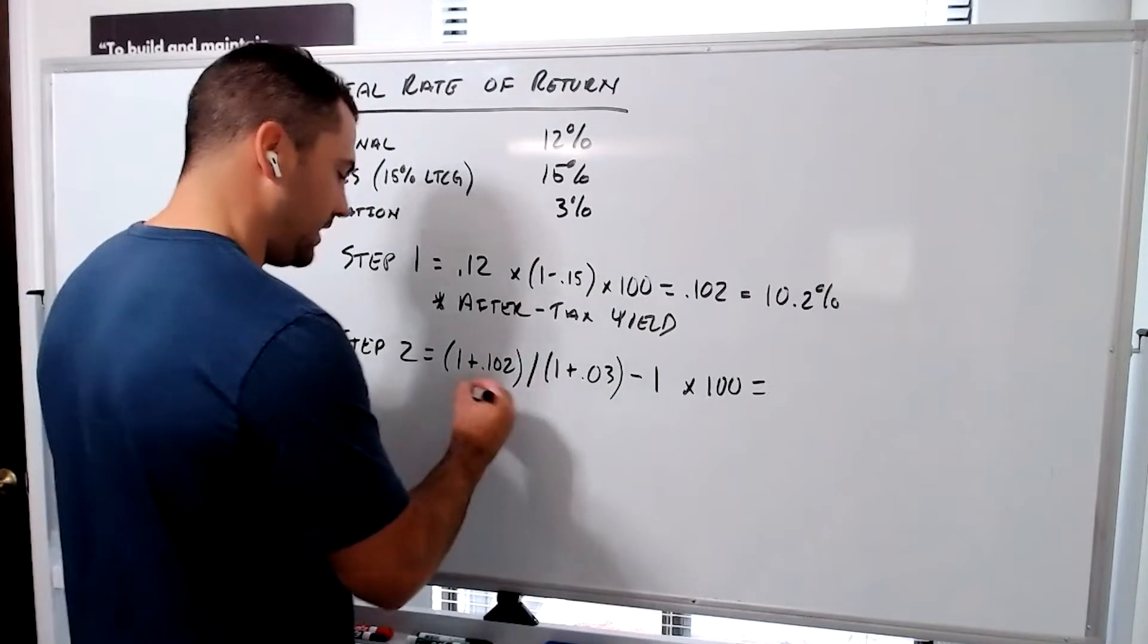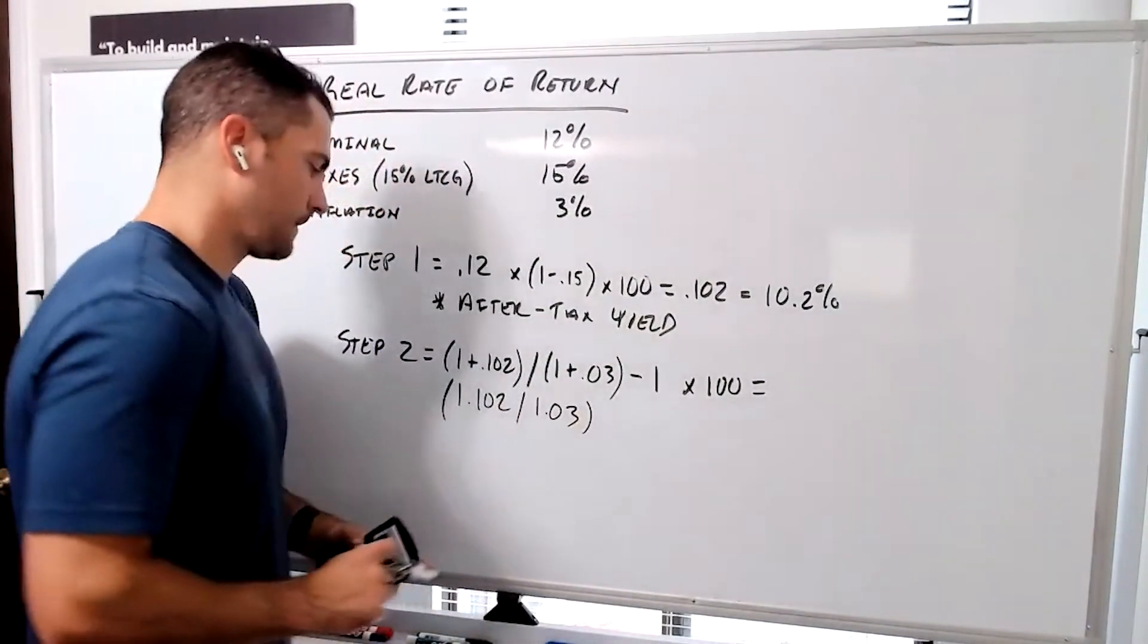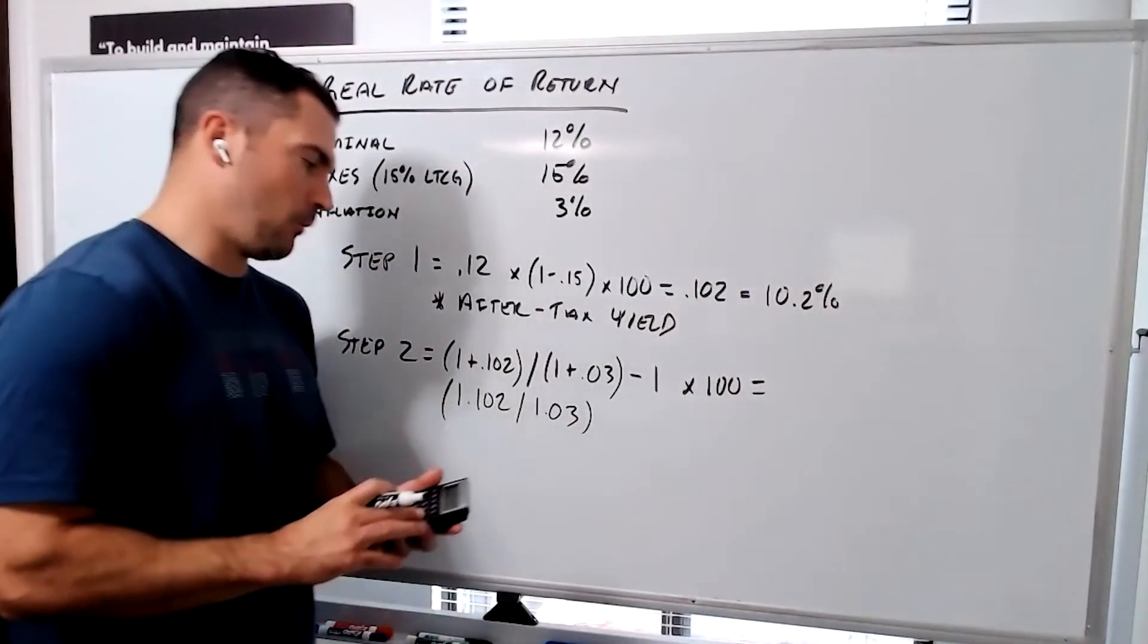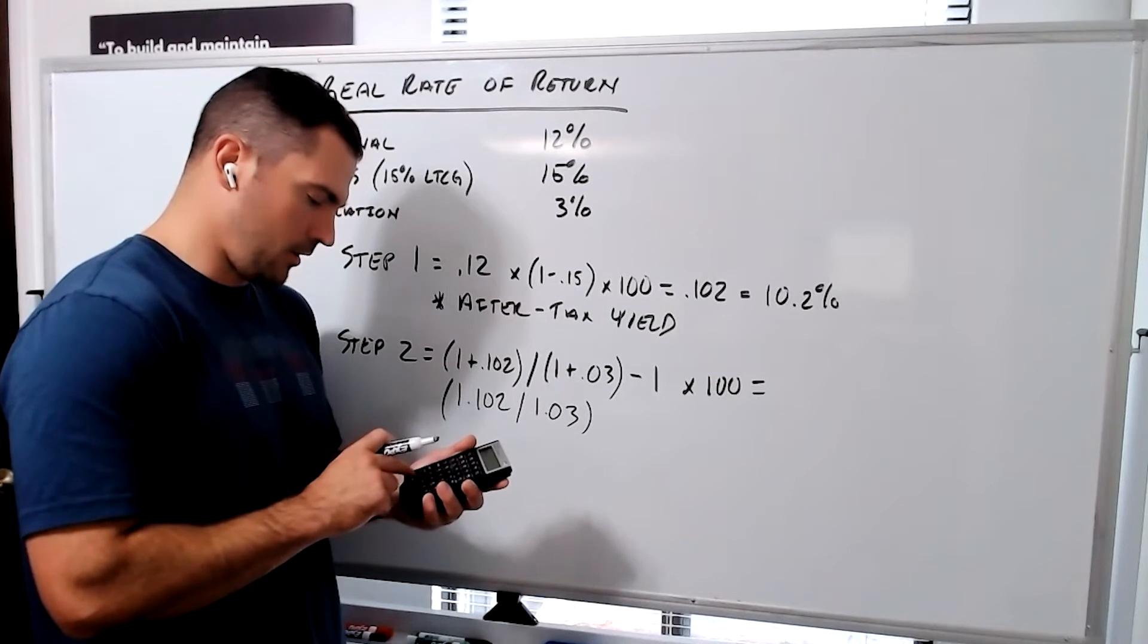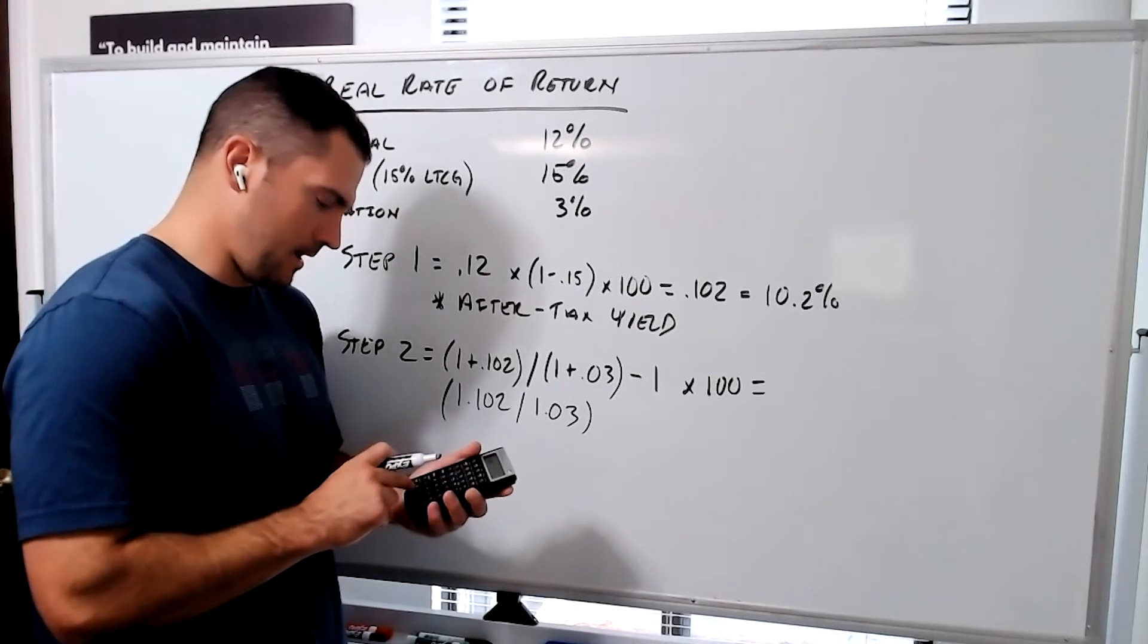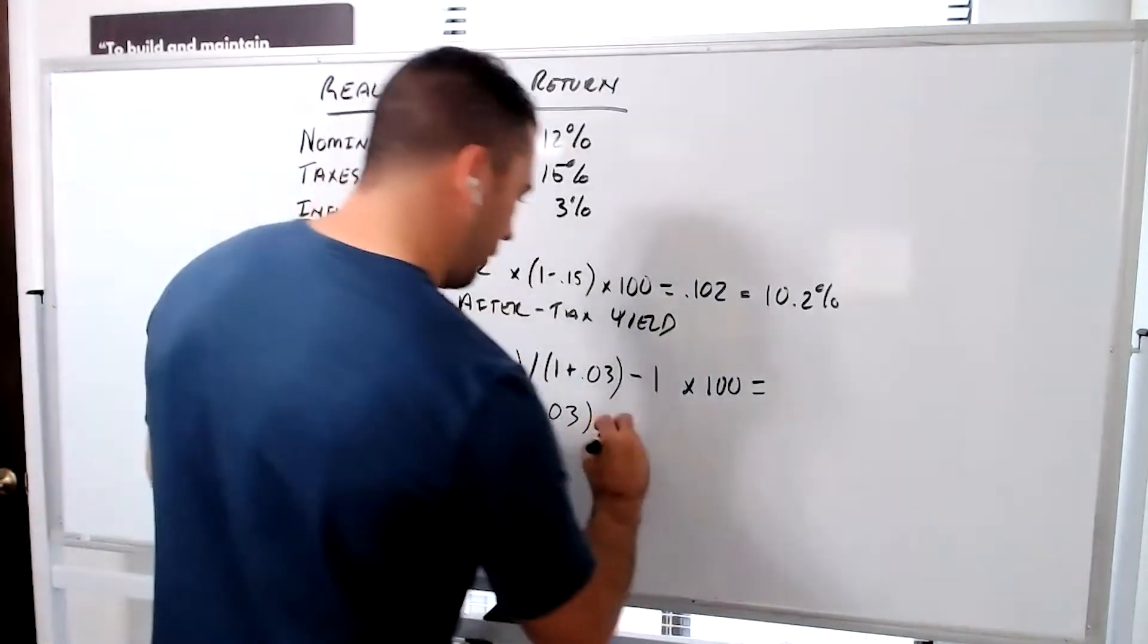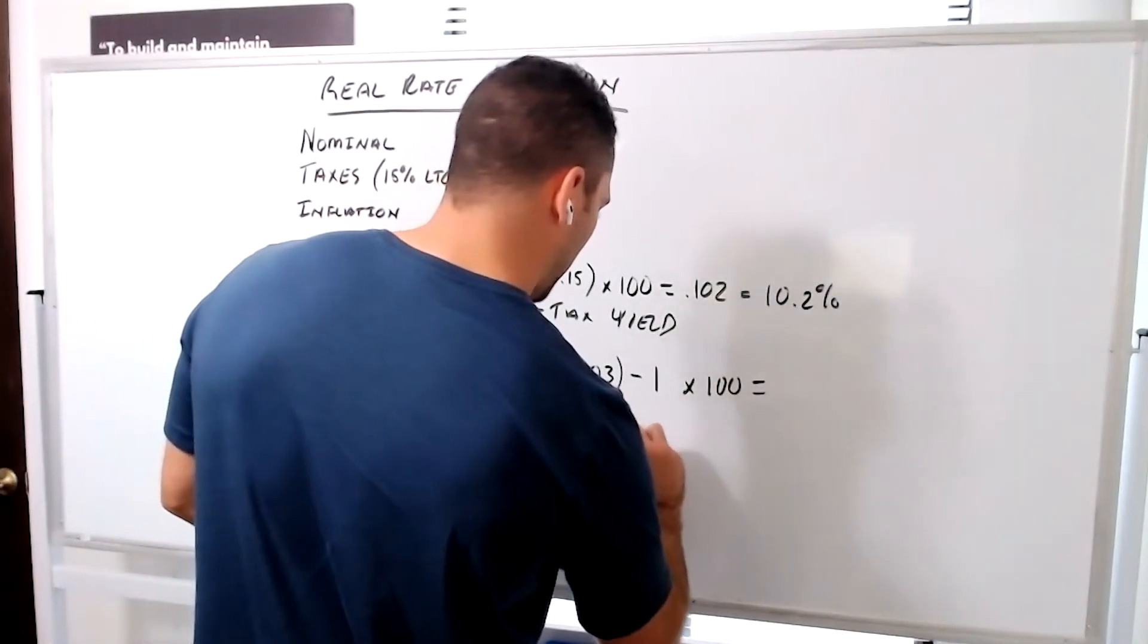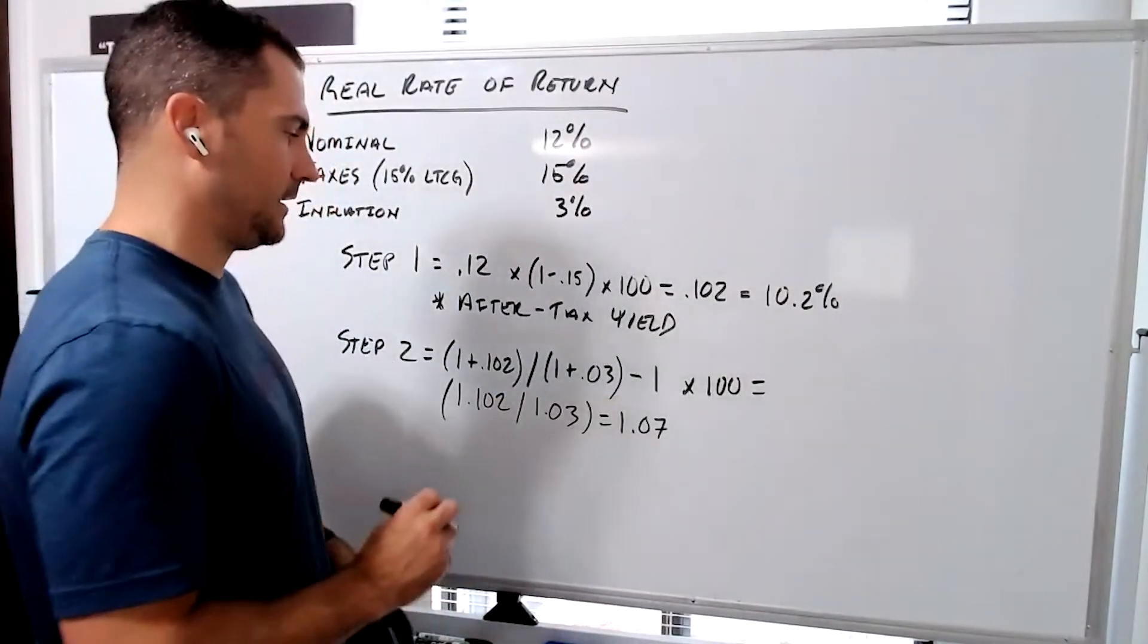Which is essentially, if we're going to use order of operations mathematics, 1.102 divided by 1.03. That equals 1.07, and there are no more decimal places on my calculator.